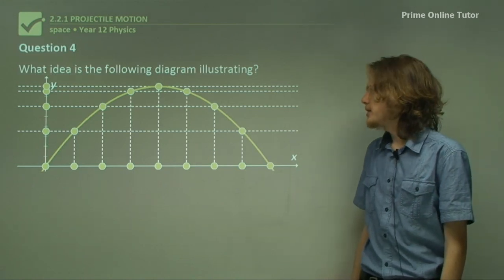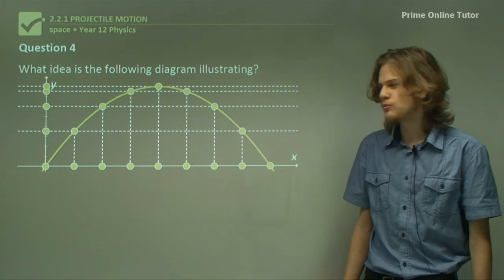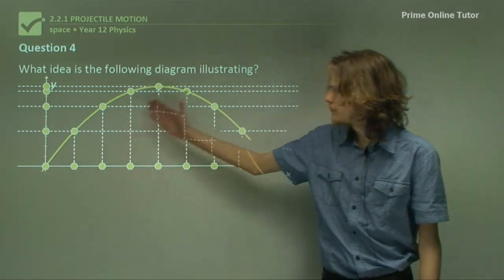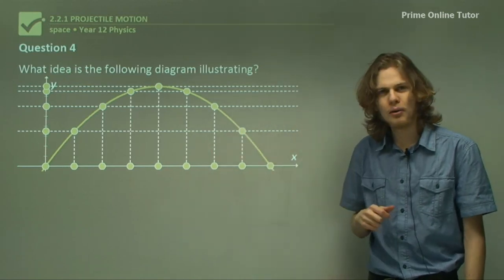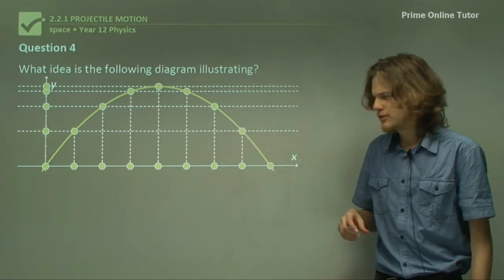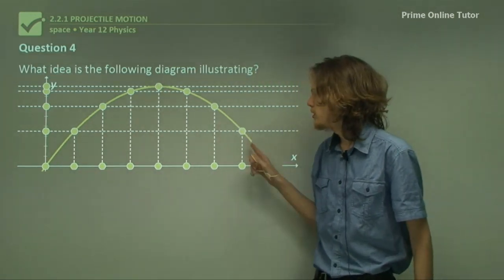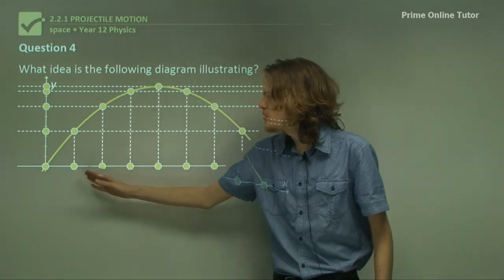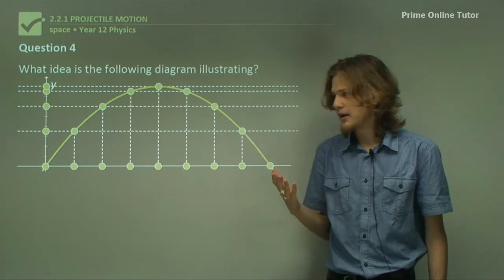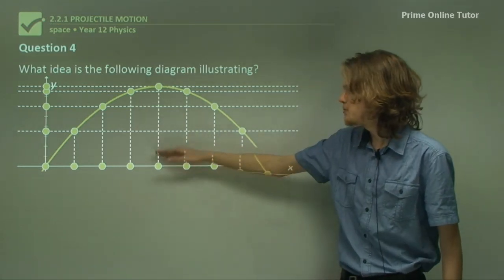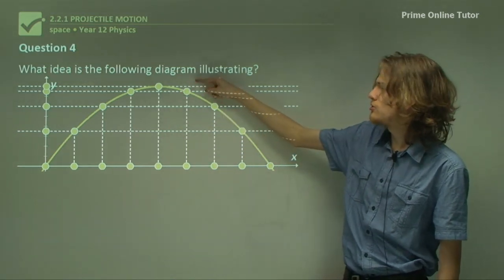Question 4. What is this diagram illustrating? We can see here we have some sort of a parabola with vertical and horizontal lines being drawn to a number of reference points in the parabola. Let's take a closer look at this. If we look at all the points on the horizontal axis, we can see that they're equally spaced. But if we look at the points on the vertical axis, we can see that they start off fairly far apart, but they get closer and closer until they're almost touching right at the top.